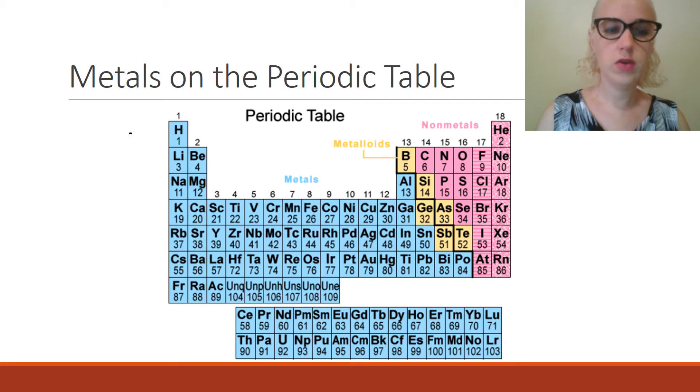This group here, not including hydrogen, so from lithium all the way down, this first group here is the alkali metals. This group here, from beryllium all the way down, is the alkali earth metals. This middle chunk here is the transition metals, and then down the bottom here we have the lanthanides and the actinides. Anything that happens down the bottom here we often call heavy metals as well.